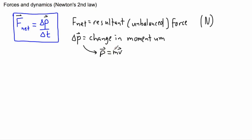If momentum is equal to mass times velocity, well that means then that the momentum will have units of kilograms and velocity are meters per second, so this is the unit of momentum. And of course we have delta t, that's a change in time, and that will be measured in seconds.